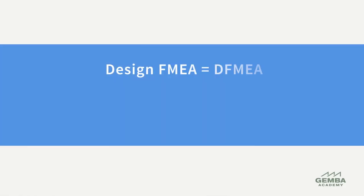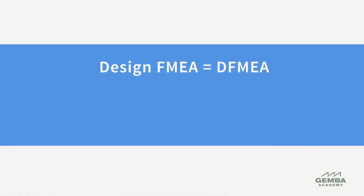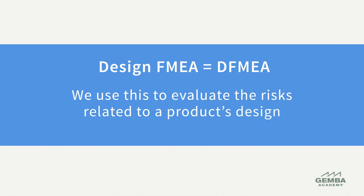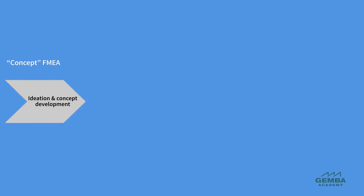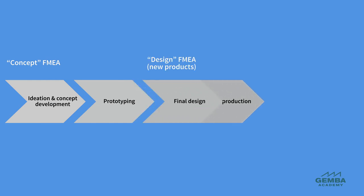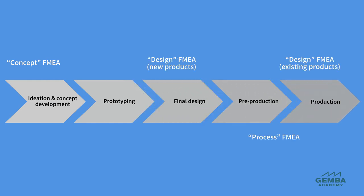The second type is the design FMEA, abbreviated DFMEA. We use this to evaluate the risks related to a product's design. The objective is to thoroughly examine how a product can fail during its useful lifetime. Design FMEAs can be conducted at different phases of the design process such as concept development, prototype, final design, and even to study failure modes of a product currently in production. The overall process for doing a Failure Modes and Effects Analysis is the same for products, processes, services, projects, or any other type of risk.